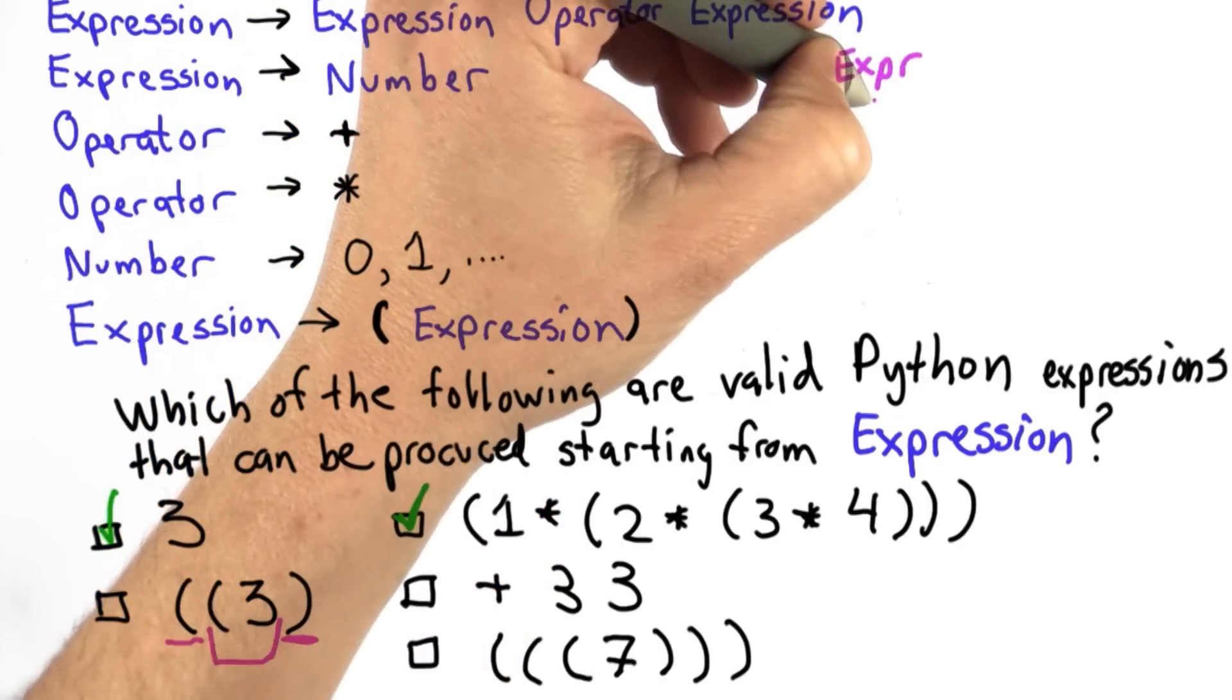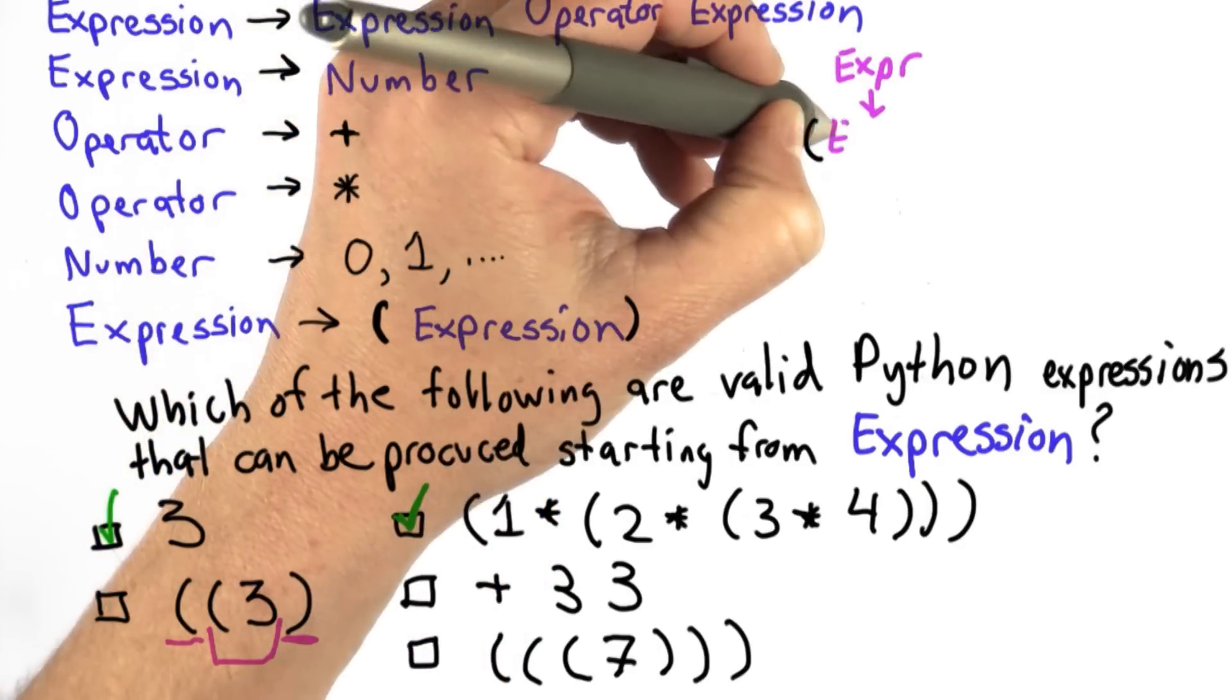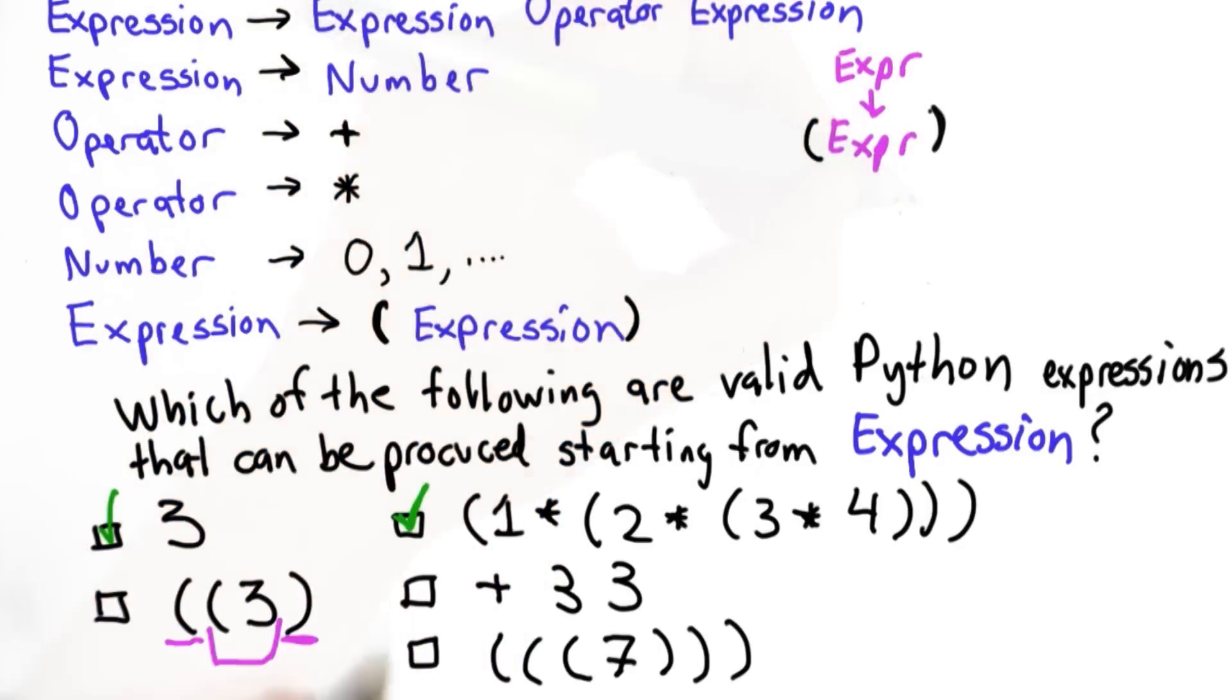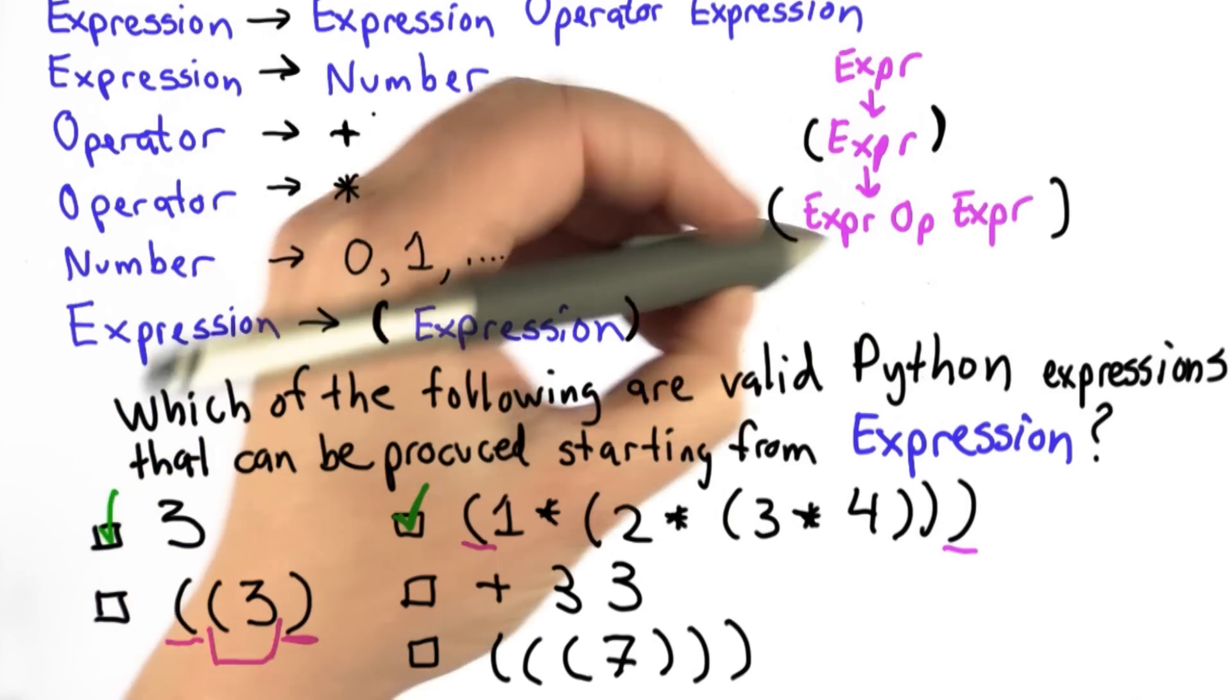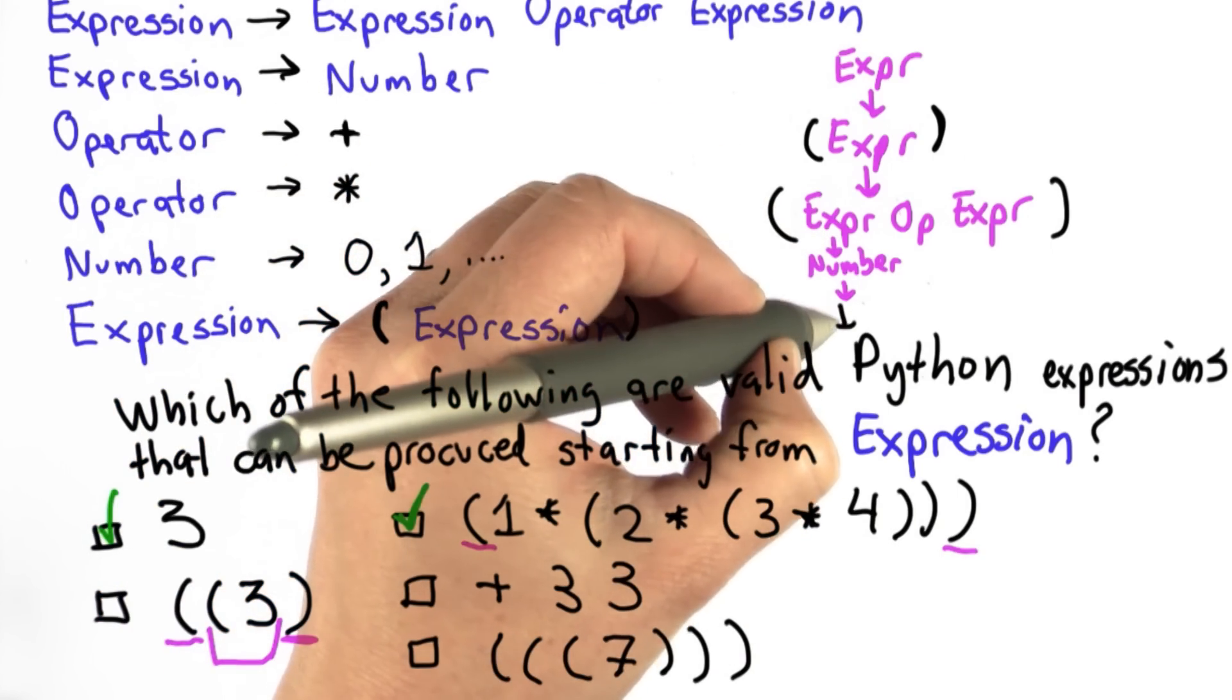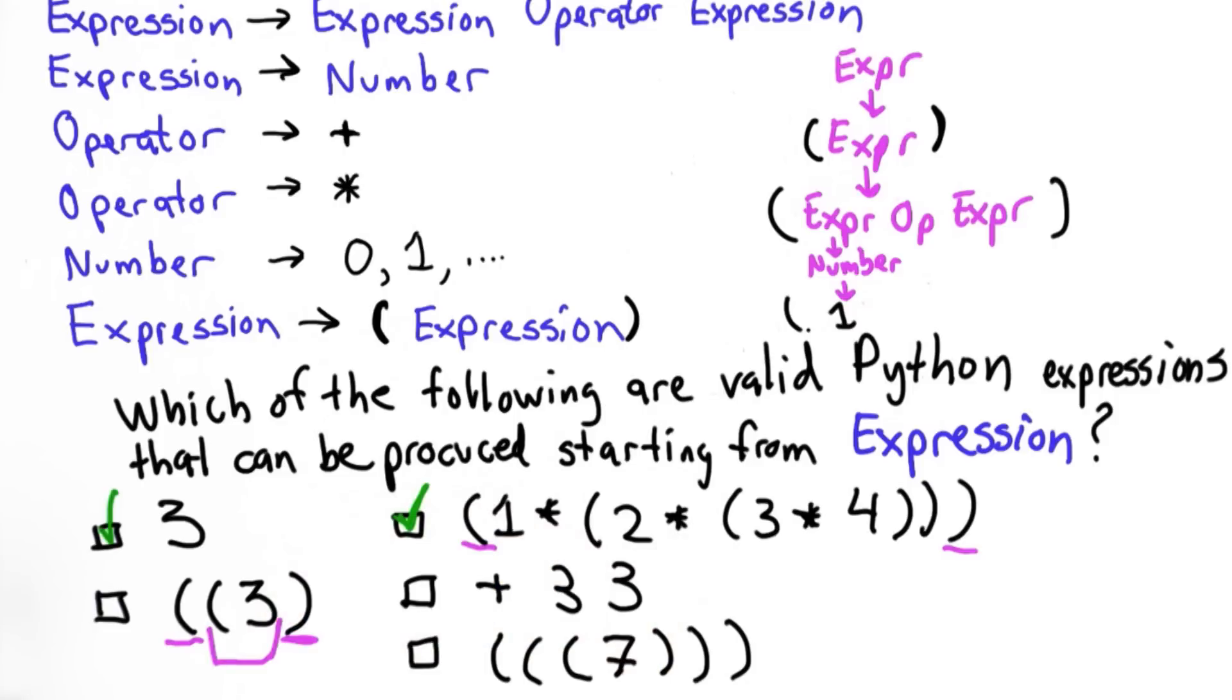We use this rule to replace it with paren expression paren. Now we have an expression that starts with a one. So we want to replace this expression with expression operator expression. We still have the outer parens that we had before. Now we're working on this part. We want to replace this expression with a number, and then with the number one.